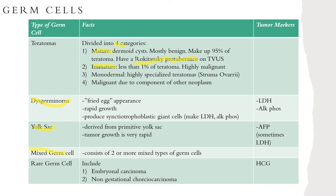The Rokitansky protuberance is a solid prominence located at the junction between the teratoma and the normal ovarian tissue. Immature teratomas are malignant teratomas, making up less than 1 percent of ovarian teratomas, but they are highly malignant. They contain ectoderm, mesoderm, and endoderm, but these are arranged in a haphazard manner. These tumors are graded based on differentiation — grade 1 being well differentiated and grade 3 being poorly differentiated.